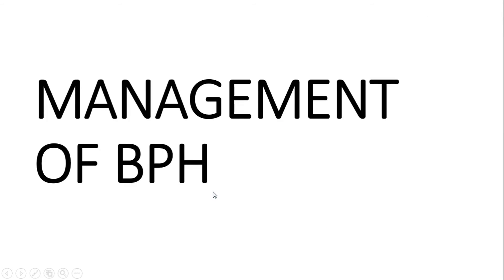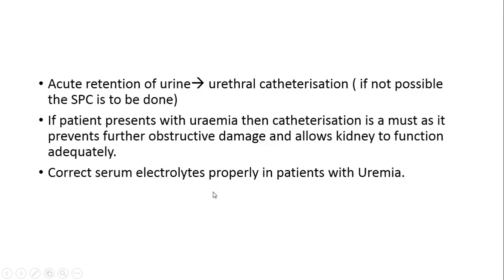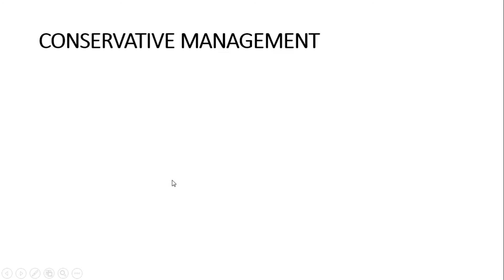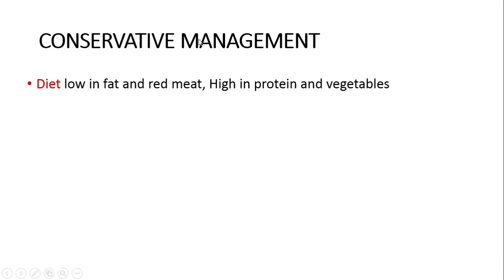Now let's talk about the management of BPH. If the patient has acute retention of urine, urethral catheterization is a must. If urethral catheterization is not possible, suprapubic cystostomy is to be done. If the patient has chronic retention of urine but presents with features of uremia, catheterization is also necessary to prevent further obstructive damage. In patients with uremia, it is also important to correct serum electrolytes. Conservative management can be done in mild cases of BPH.